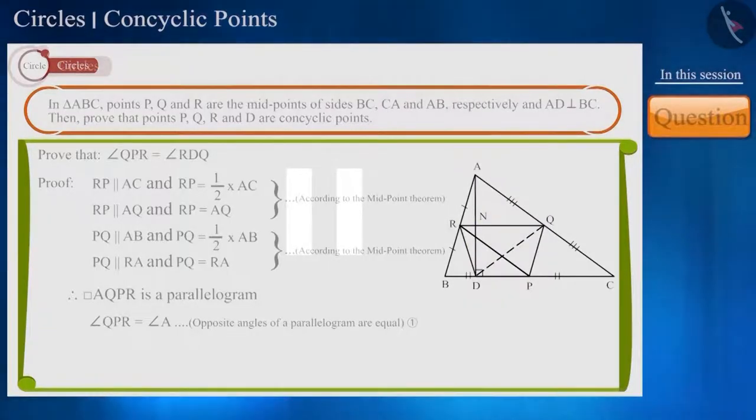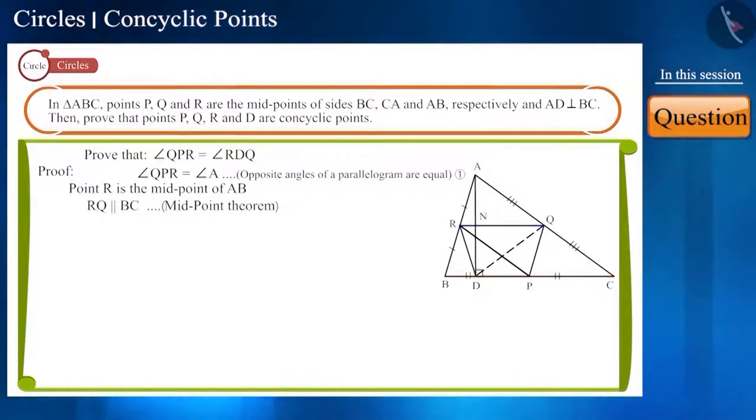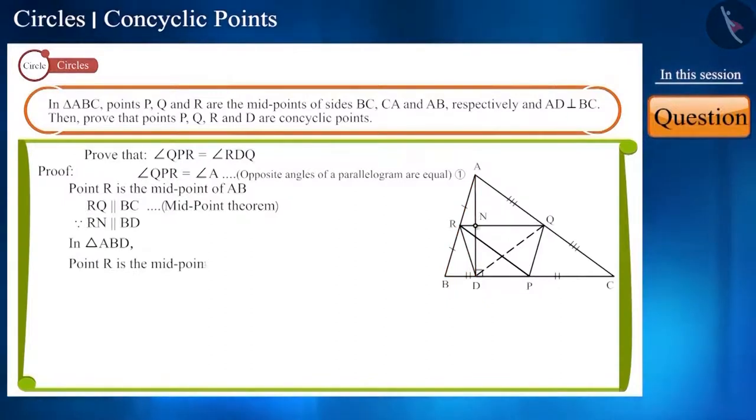You can pause the video and try to prove it. Point R is the midpoint of side AB and RQ is parallel to BC. So, RN will be also parallel to BD. If in triangle ABD, if we use the converse of the midpoint theorem, then we can say that point N will be the midpoint of side AD, that is, DN and AN will be equal.